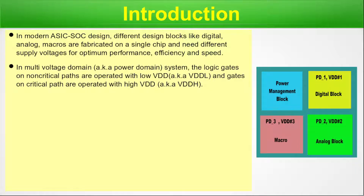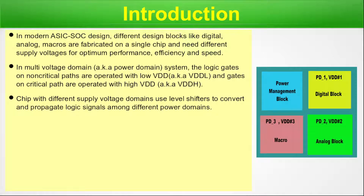In a multi-voltage domain, also known as a power domain system, the logic gates on non-critical paths are operated with low VDD — also known as VDDL — and gates on critical paths are operated with high VDD, also known as VDDH. Chips with different supply voltage domains use level shifters to convert and propagate logic signals among different power domains.